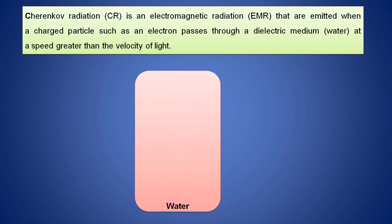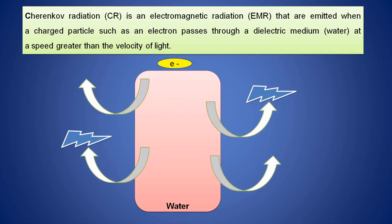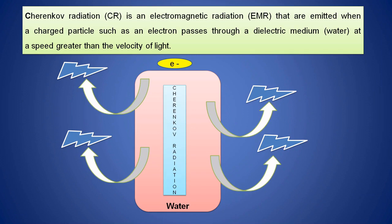If you take water as the dielectric medium and consider an electron passing through it, the electron emits blue color electromagnetic radiation called Cherenkov radiation. When an electron travels through a dielectric medium like water whose velocity is greater than light, it emits electromagnetic radiation in the blue color range. The condition is that the electron must travel faster than the velocity of light for Cherenkov radiation to occur.